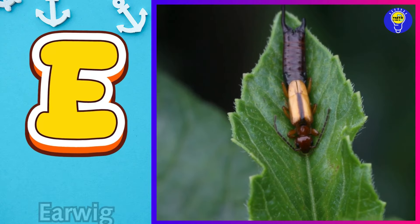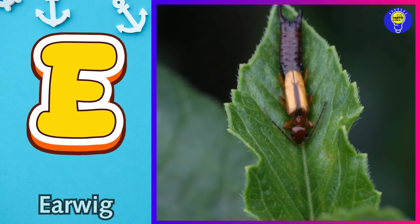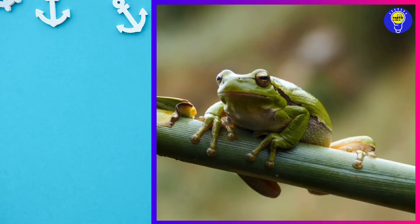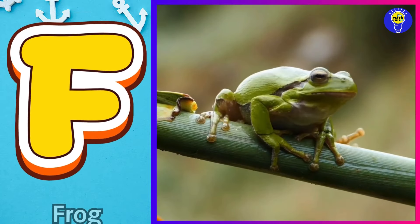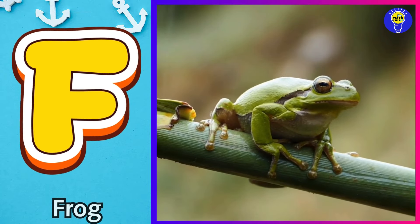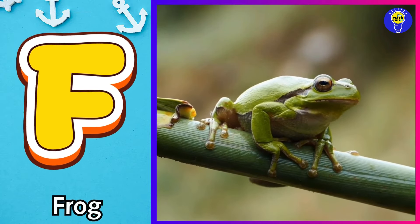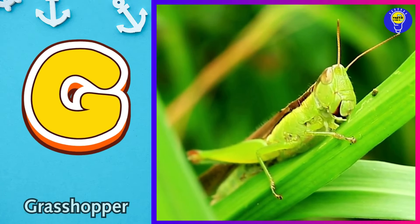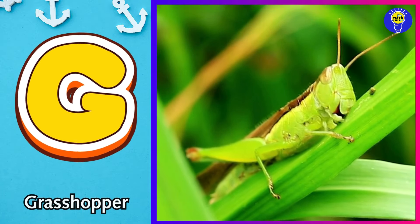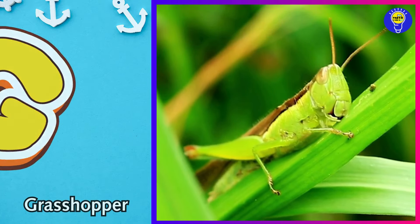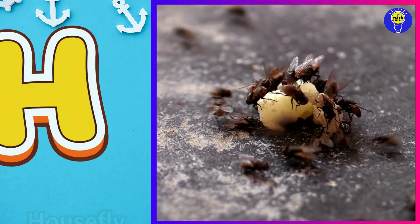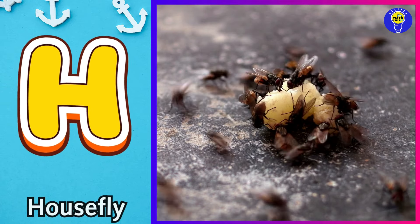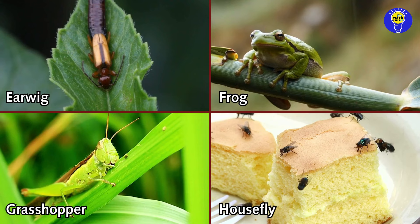E is for earwig. e, earwig. F is for frog. f, frog. G is for grasshopper. g, grasshopper. H is for housefly. h, housefly.